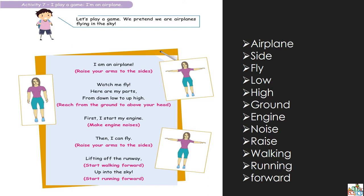On va voir ça là, mais on va lire tout d'abord. Allons-y ensemble — I am an airplane. Do you still remember what is 'I'? I veut dire moi. I am — qui est le verbe du present tense. Ensuite airplane — do you still remember what is an airplane? On doit être un avion.